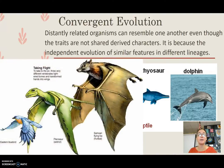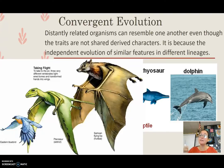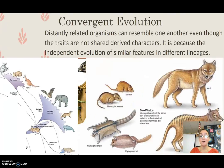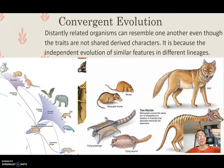Flight is another example of convergent evolution. This bird, this reptile, and this flying fox do not have a common ancestor that flew, so flight has evolved three different times independently — not because of common ancestry. When organisms evolve to look similar, that's convergent evolution, versus divergent evolution where a common ancestor diverges to look different. We can also see this when comparing animals from Australia and North America — they've diverged but then evolved to look very similar. We'll talk more about that in class.